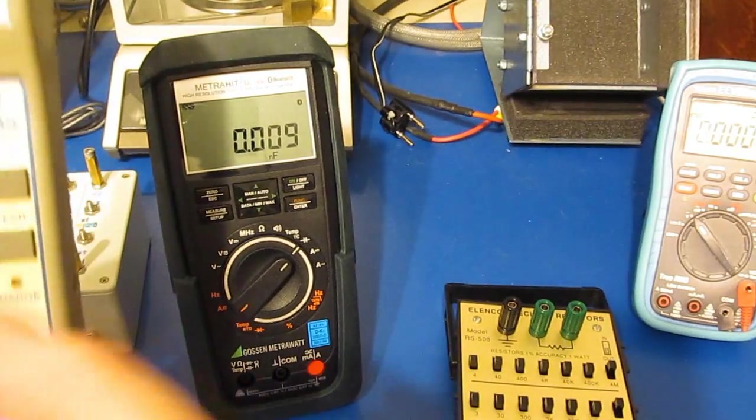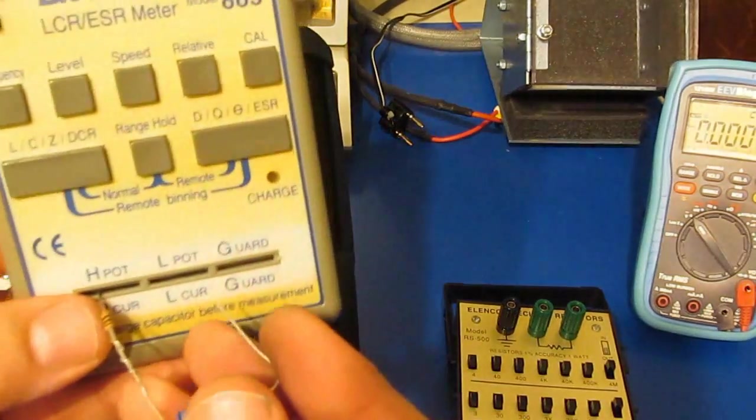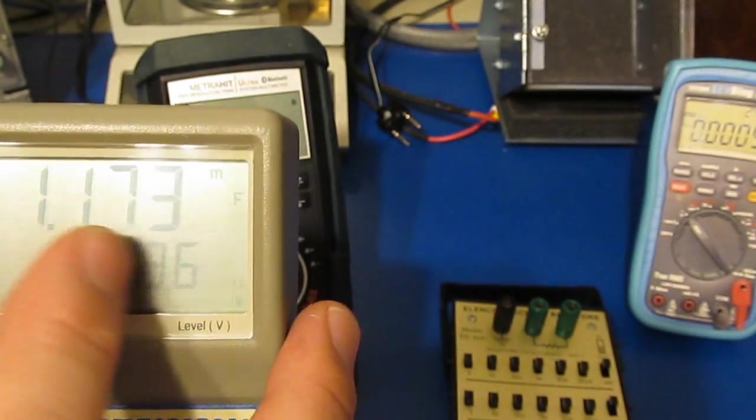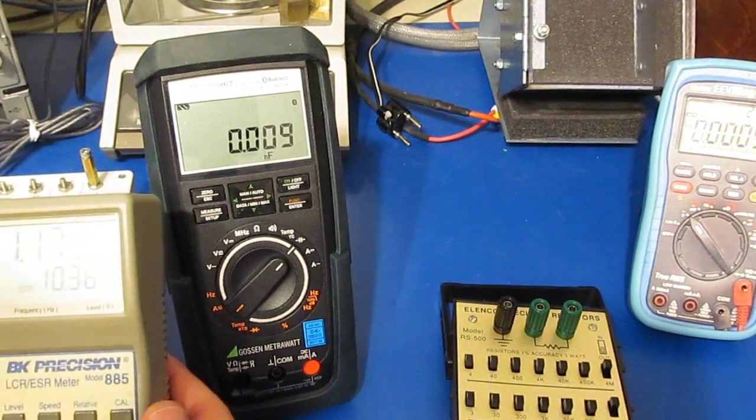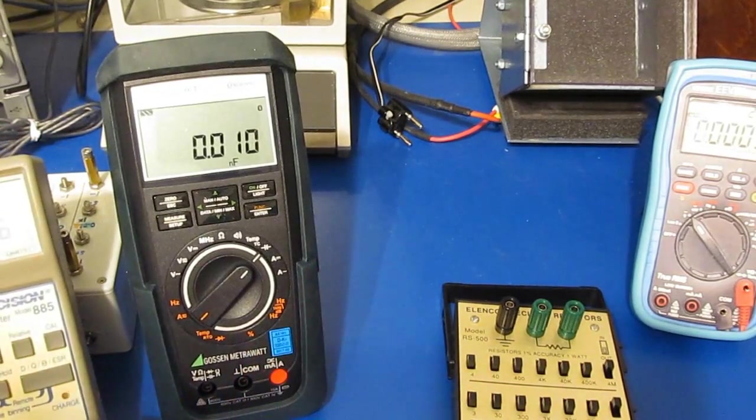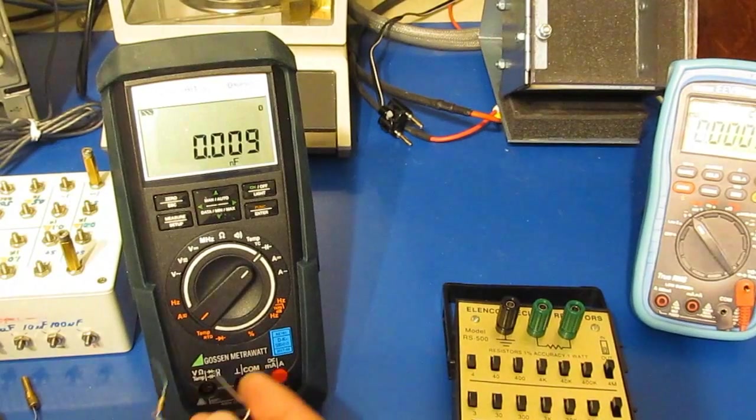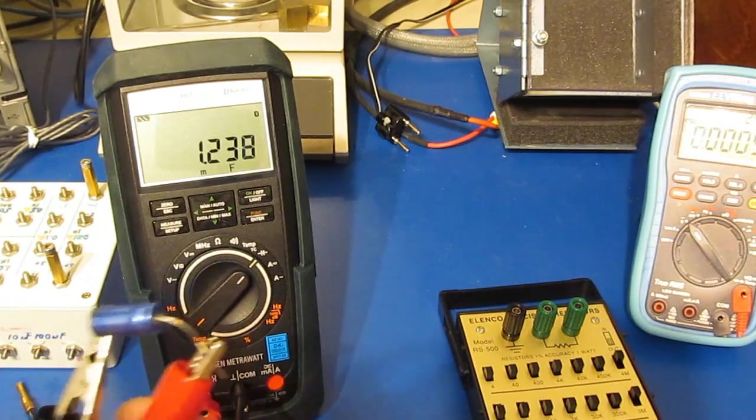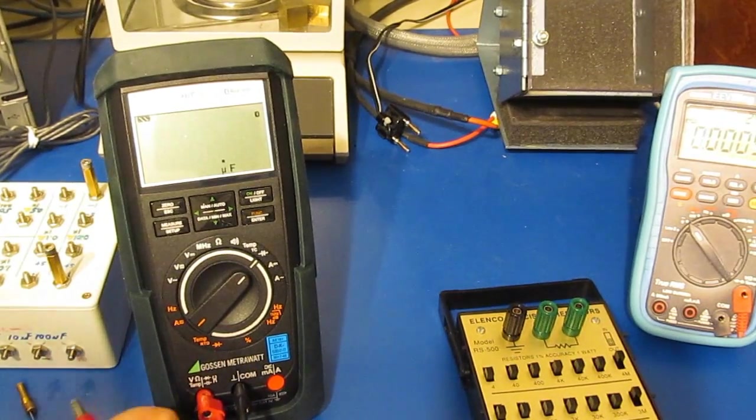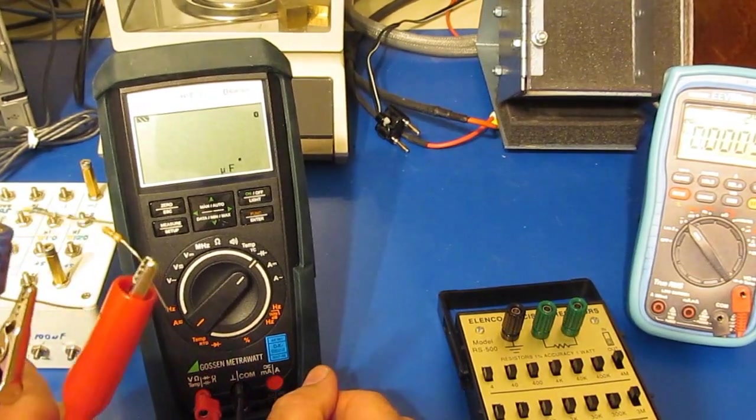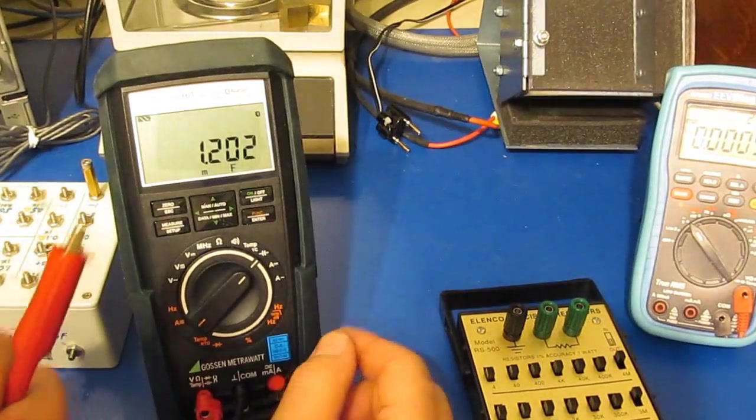If I reattach this capacitor with resistor, you can see it's now reading 10.36 ohms and 1.172 millifarads. Let's just try this with the Gossen and we'll see if it sees a difference between these two values. You can see it's reading 1.238, 1.24 or so.